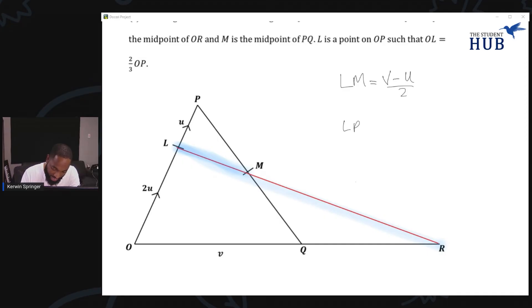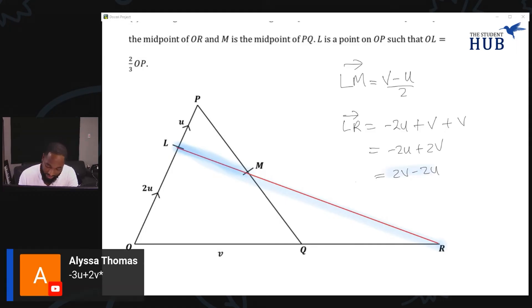LM is equal to (v minus u)/2. So all we need to do is find what LR is. LR - I can think of LR as this plus this plus this. LR is negative 2u because I'm going backwards, plus a v plus another v. This is actually working out pretty fast.